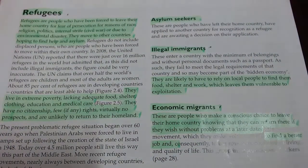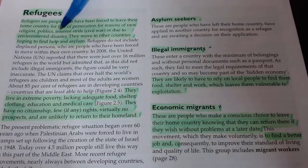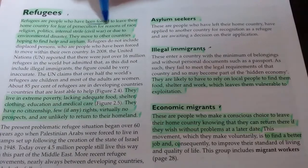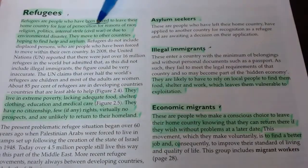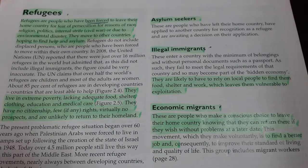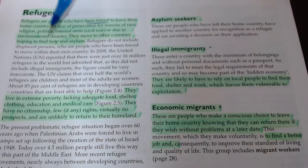The big one is refugees. We've already written a definition for refugees but haven't included many of the causes. Refugees are people who have been forced to leave their home country — forced out against their choice — for fear of persecution for reasons of race, religion, politics, civil war, or due to disaster. Any of those things can create refugees, and they'll try and move to other countries hoping to find help, asylum, refuge, safety, and a new life.